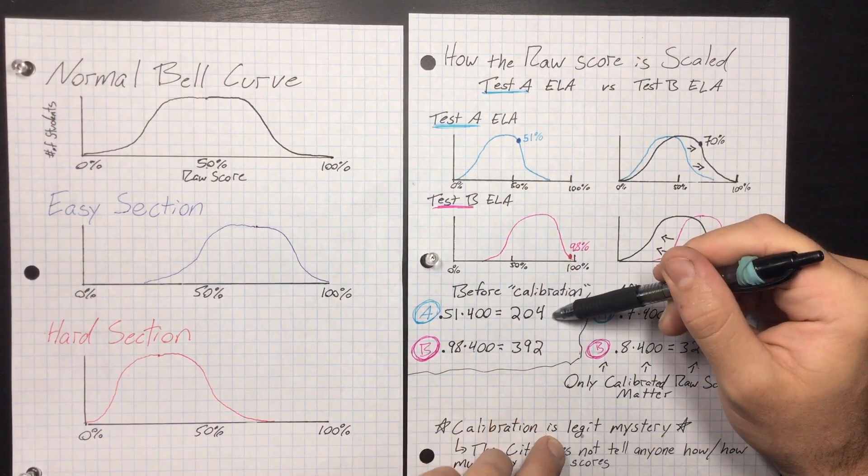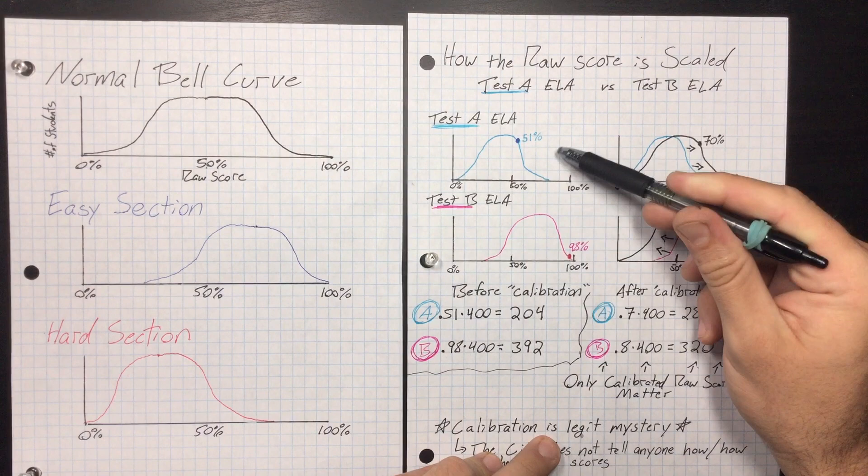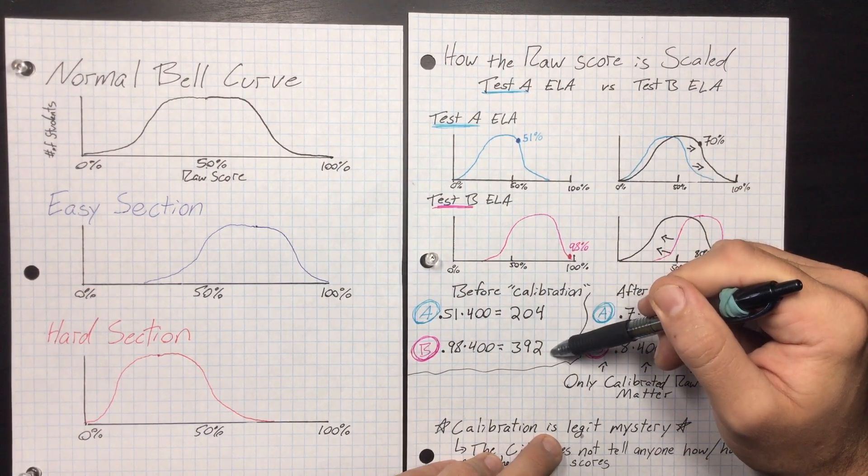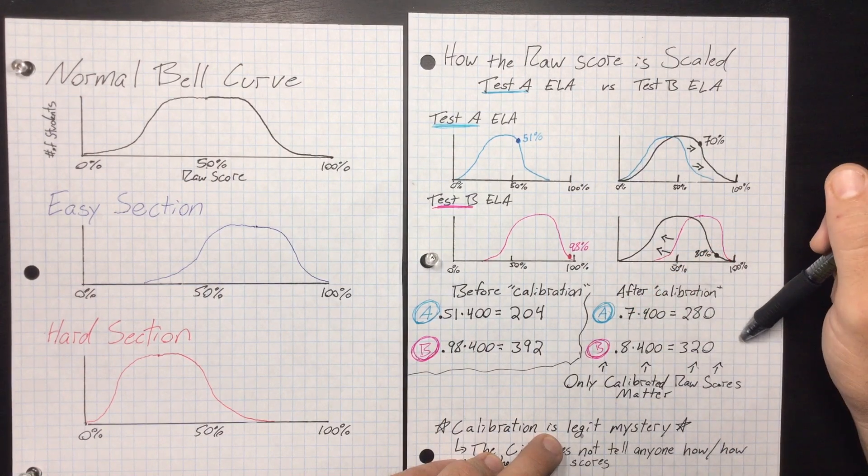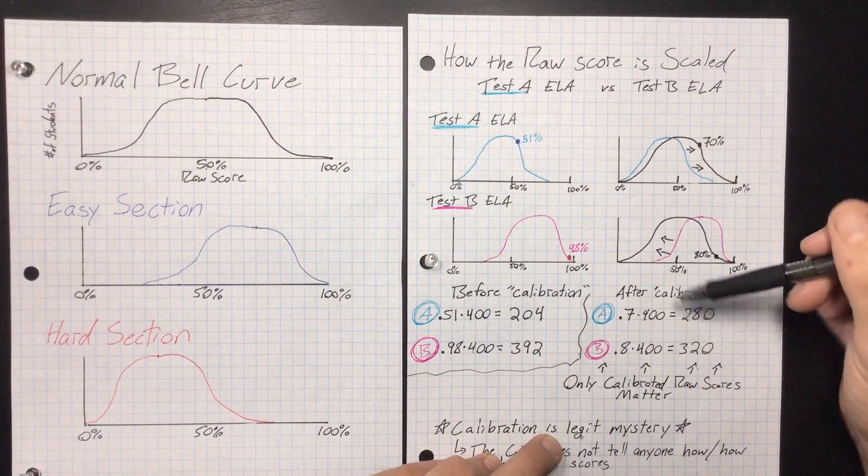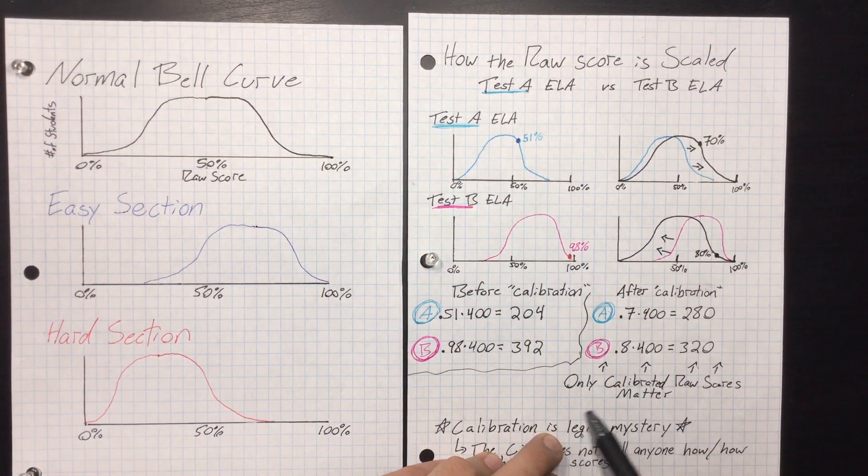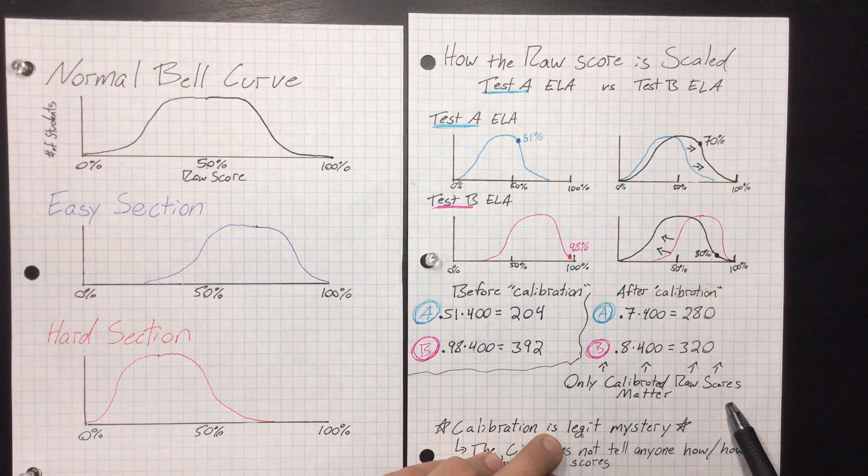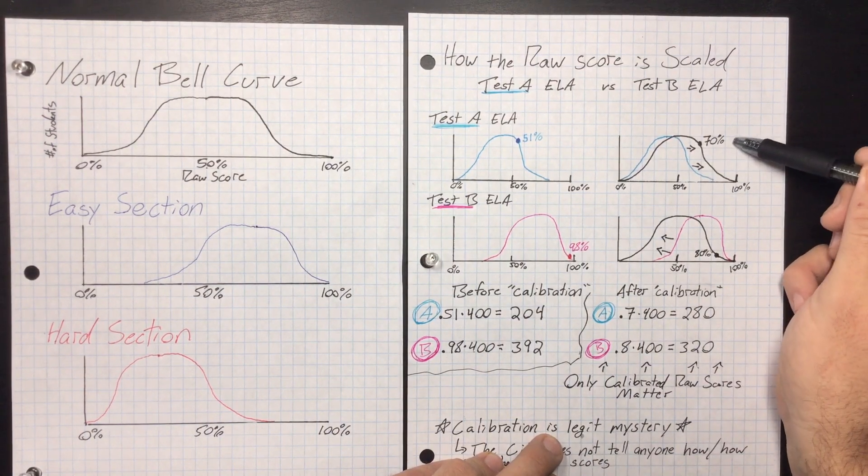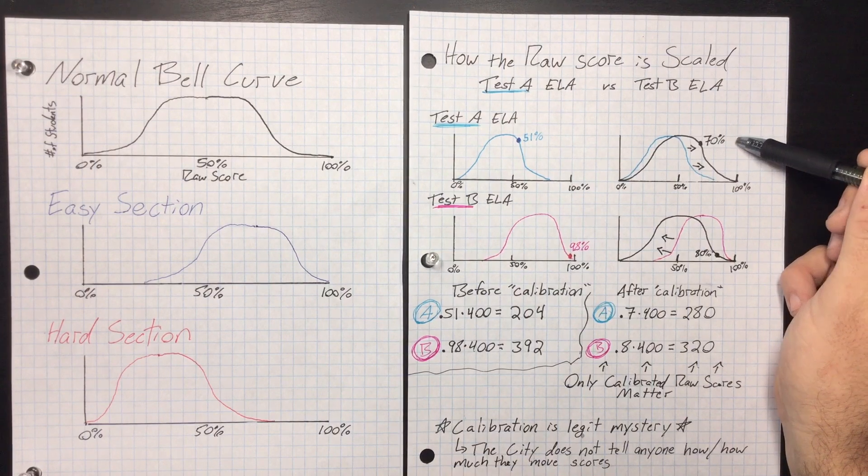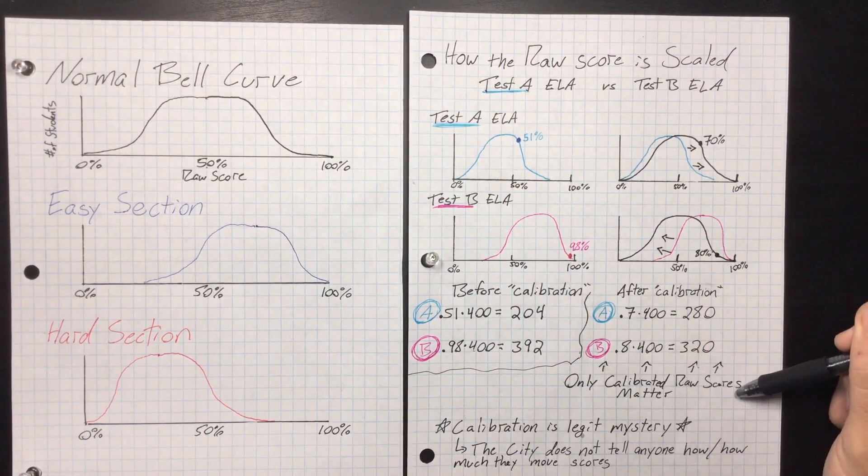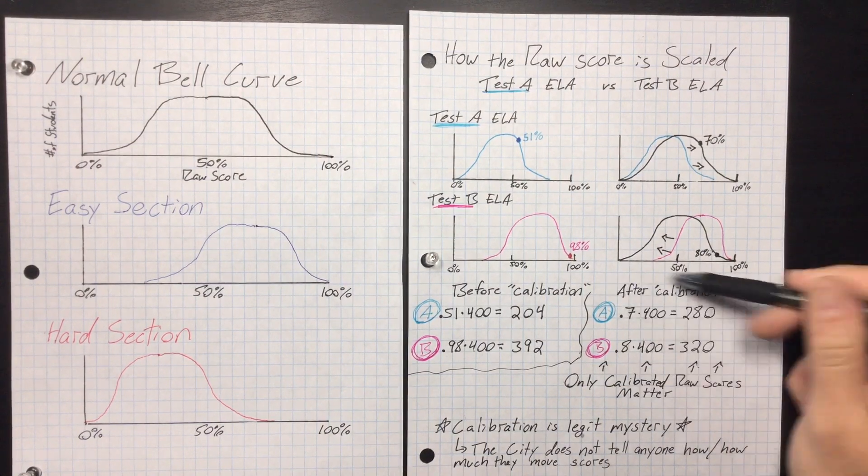Let me show you how the score difference before calibration: this hard test A is a 204, and this easy test B you get a 392. But after calibration, your score goes up on test A and your score goes down in test B. Only calibrated raw scores matter. That is the most important part. After they do the calibration, that is what matters. So this is what a scaled score is. When you calibrate a raw score, that turns into your scaled score.